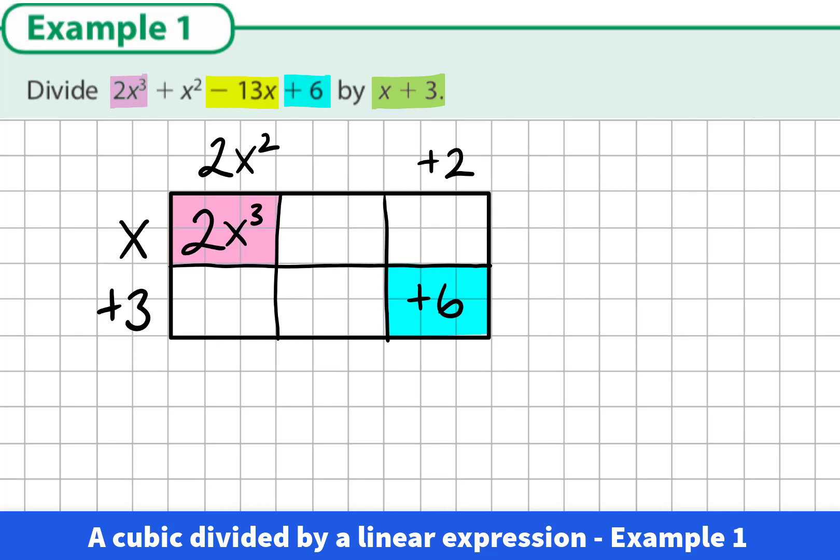Now we've only one part of our quadratic defined at this stage. We're going to use the fact that we know these two yellow boxes must add up to negative 13x. We know from multiplying out that this is where the x terms go. We know that x by 2 is 2x, but we need them to add up to negative 13x. So we need a negative 15x in this other yellow box because negative 15x plus 2x is negative 13x.